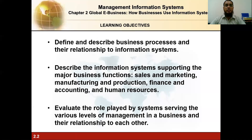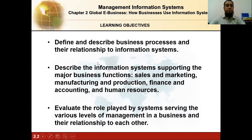So the learning objectives of the chapter. The first learning objective is to define and describe business processes and their relationships to information systems. Second, we will describe the information systems supporting the major business functions.